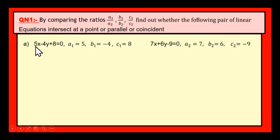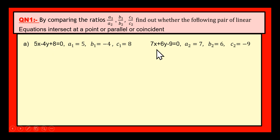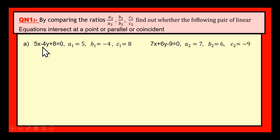Here is the first bit: 5x minus 4y plus 8 is equal to 0, and 7x plus 6y minus 9 is equal to 0. These are the two given linear equations in two variables. Linear equation means it is an equation of first degree — it contains two variables. Therefore, it is a linear equation in two variables.